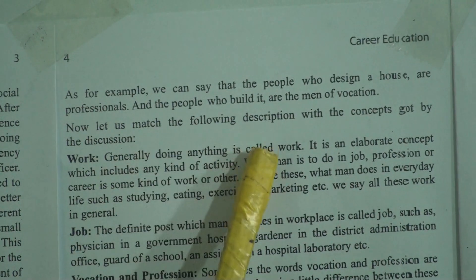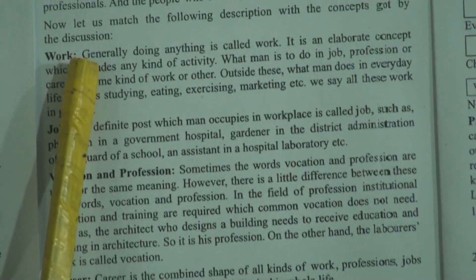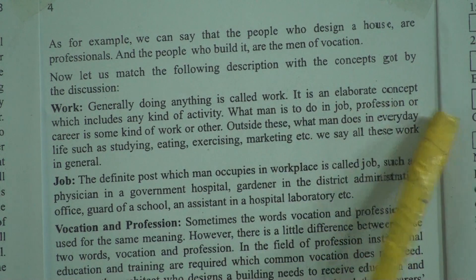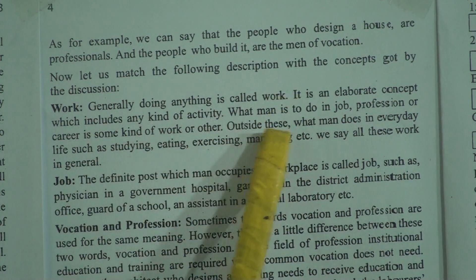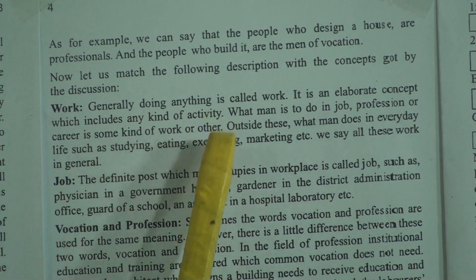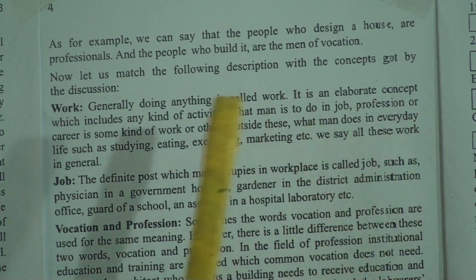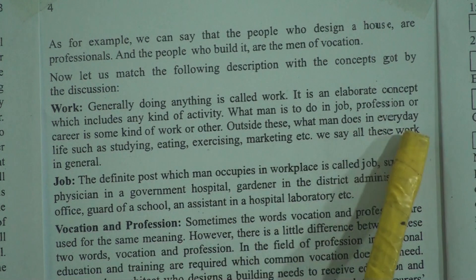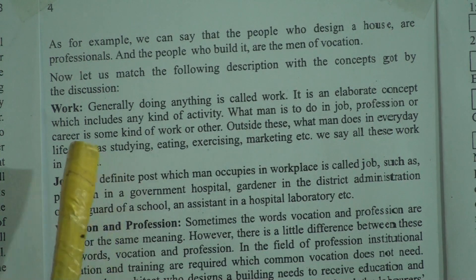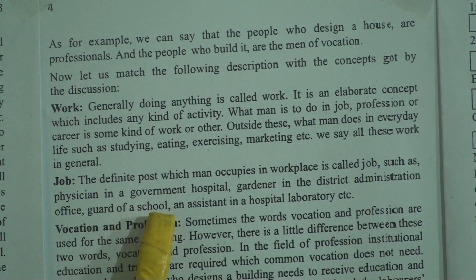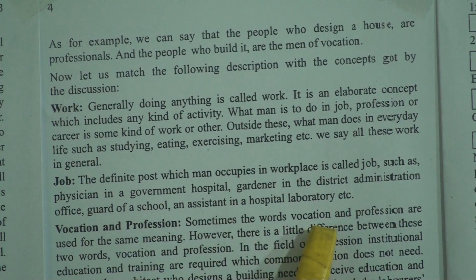Now let us match the following descriptions with the concepts. Work: generally, doing anything is called work. It is an elaborate concept which includes any kind of activity. What man is to do in job, profession, or career is some kind of work or other. Outside this, what man does in everyday life — such as studying, eating, exercising, marketing — we say all these as work in general. Job: the definite post which man occupies in a workplace is called job, such as physician in a government hospital, gardener in the district administration office, guard of a school, an assistant in a hospital laboratory, etc.